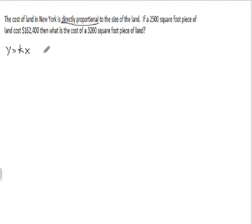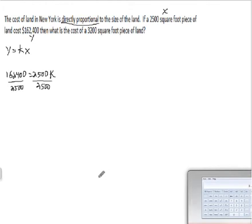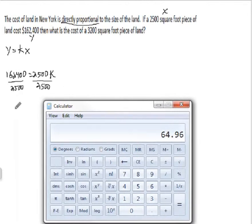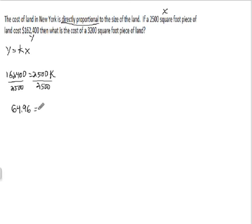We've got to use what we know in order to find our k. We know two pieces of information. We know the square feet of the land and we know the cost. So if we call the square feet x and the cost y, we could plug those into our equation. 162,400 equals 2,500 times k. Divide each side by 2,500. I'm just going to do this on a calculator. We'll get 162,400 divided by 2,500, and we'll get 64.96 is our value of k.